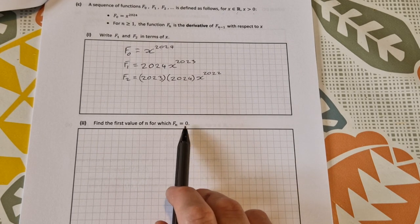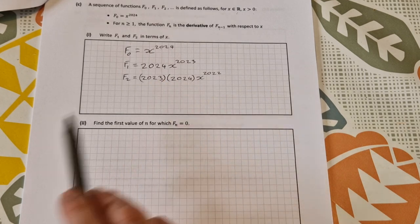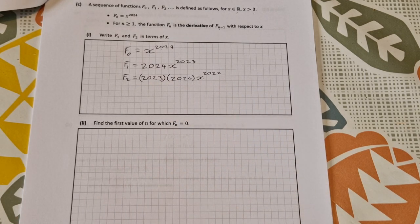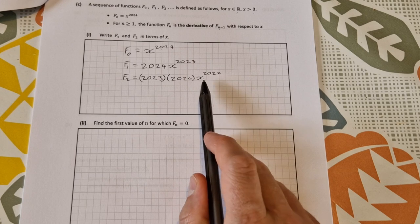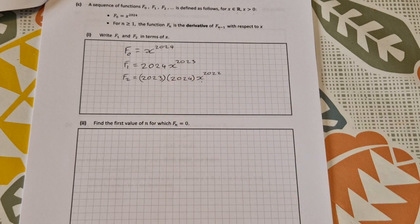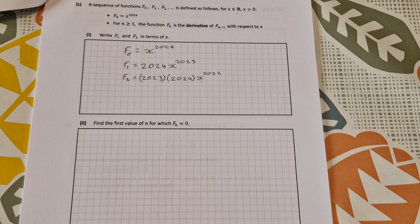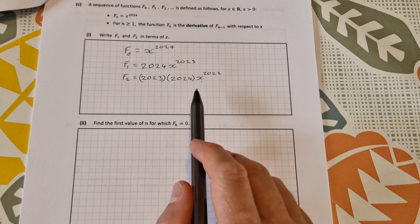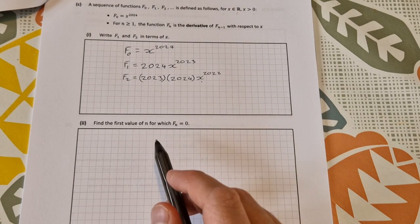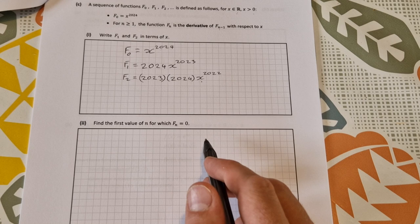Part two then, continuing on from that: find the first value of n for which f of n is equal to 0. So when is this thing going to be equal to 0? When is it always going to be equal to 0 regardless of what value of x you have? Well I know that x to the power of 0 is equal to 1. I know that the next one then after that, if I differentiate x to the power of 0, I'll be multiplying by 0.